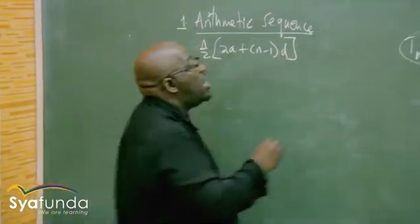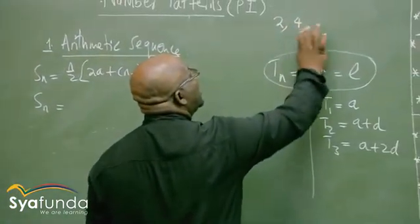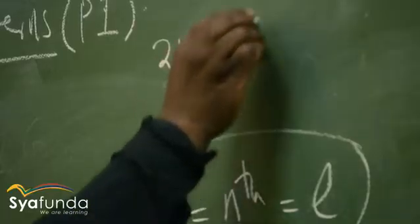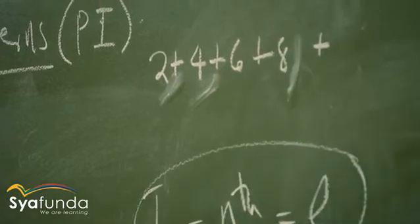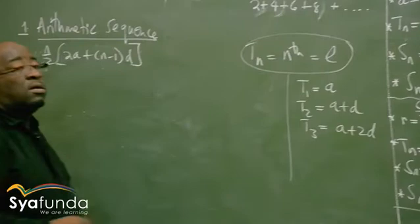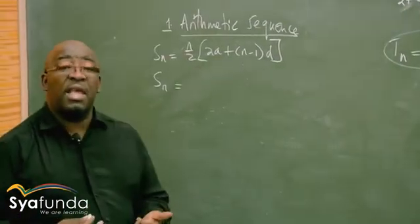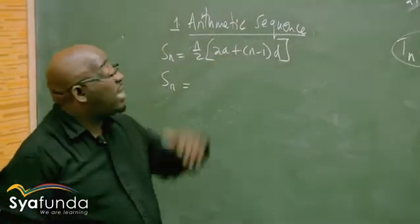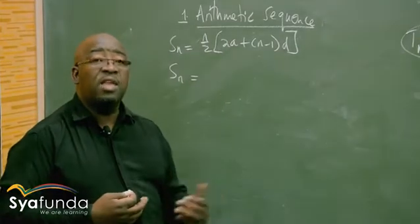Let me just make it a series: 2 plus 4 plus 6 plus 8 and so on. What is T1? We said T1 is the same as A. In this particular case it is 2, so T1 is 2. What is A? A is also 2.